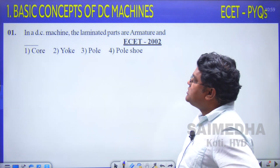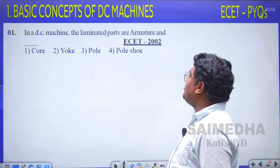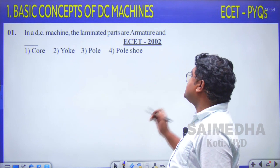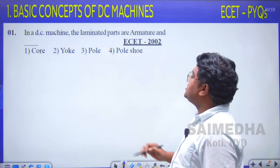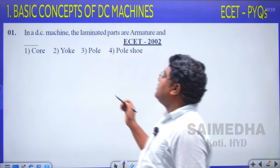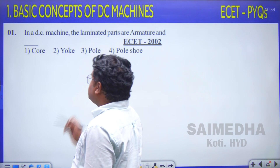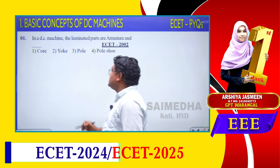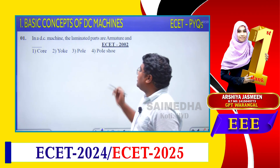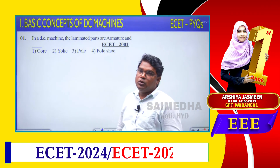Question 1: In a DC machine, the laminated parts are the armature and — option 1: core, option 2: yoke, option 3: pole, and option 4: pole shoe.